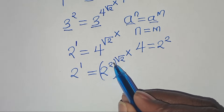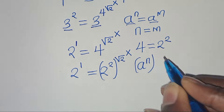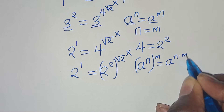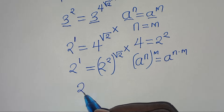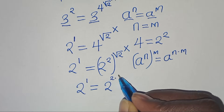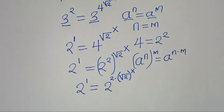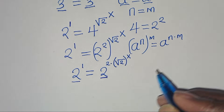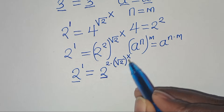We have 2² raised to the power of square root of 2 to the power of x. This is in the form of a^n raised to the power of m, which we can express as a^(n×m). Applying this exponent property, we get 2^1 = 2 raised to the power of 2 multiplied by square root of 2 to the power of x. Since the bases are common, exponent 1 must equal 2 multiplied by square root of 2 to the power of x.